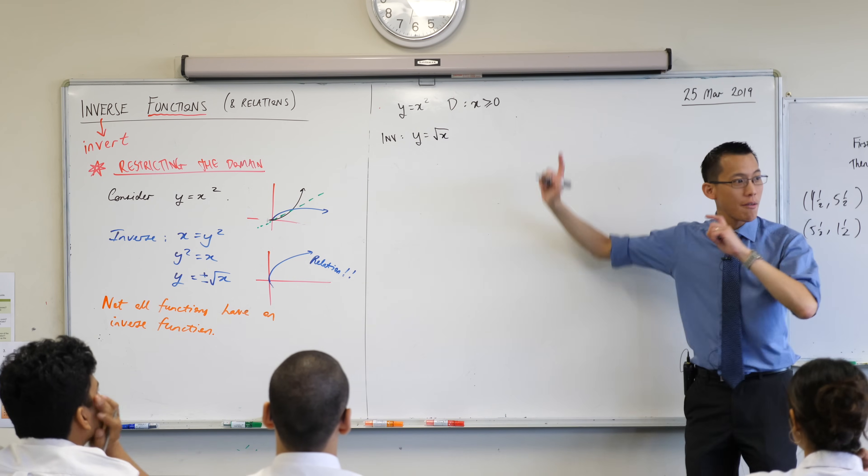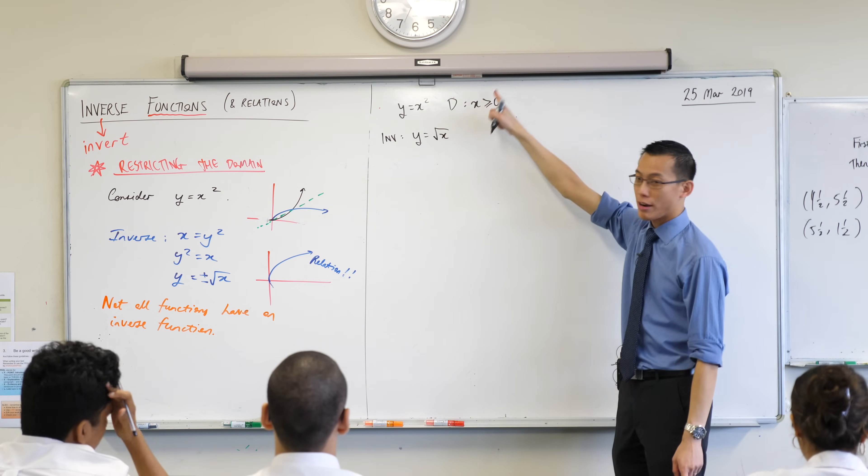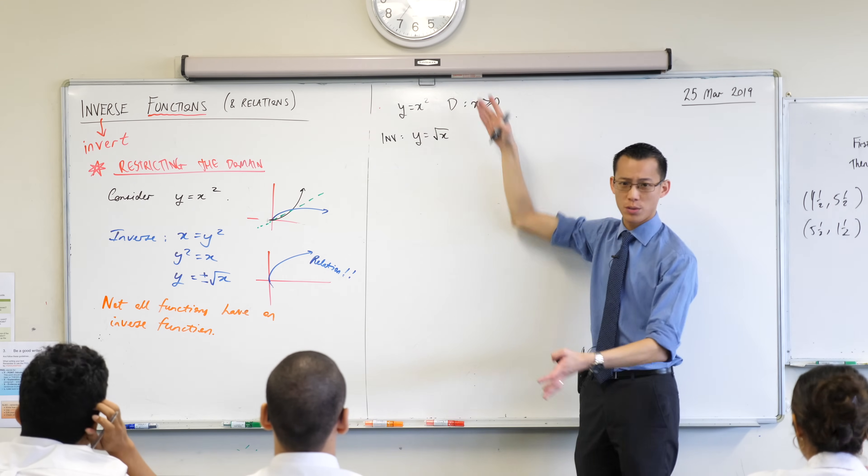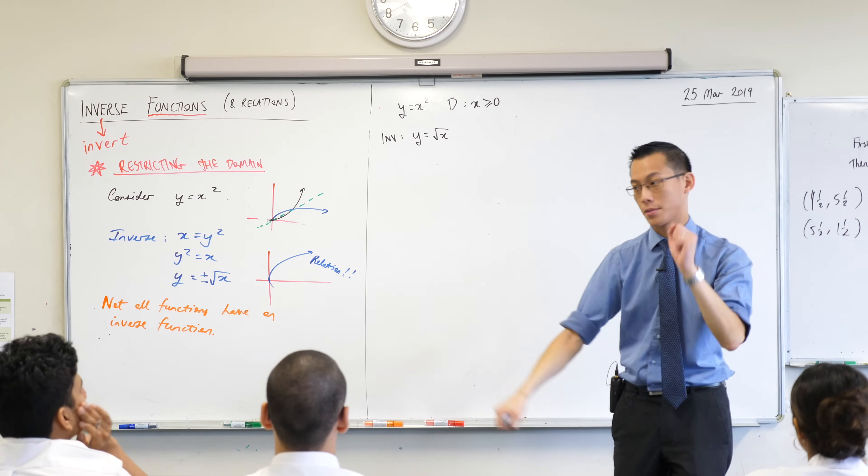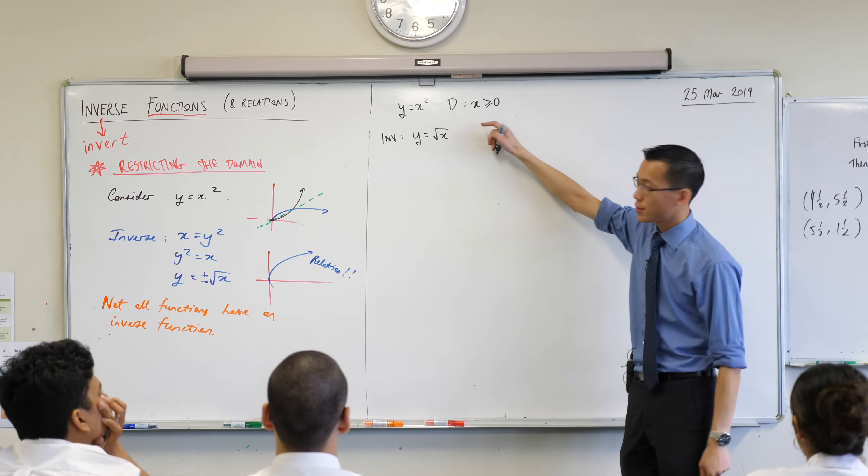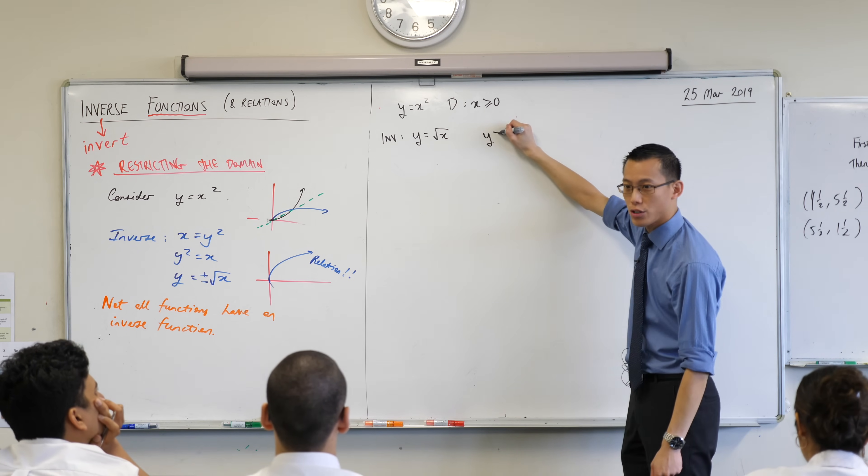Now, the domain x is greater than equals zero. Remember when we went from a function to its inverse? We swapped everything. We swapped every x becomes a y, every y becomes an x. Well, when you swap this, you get a y is greater than or equal to zero.